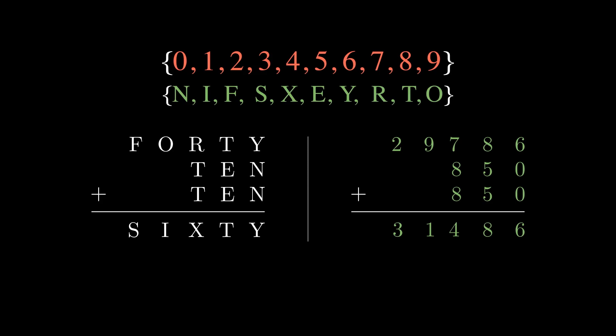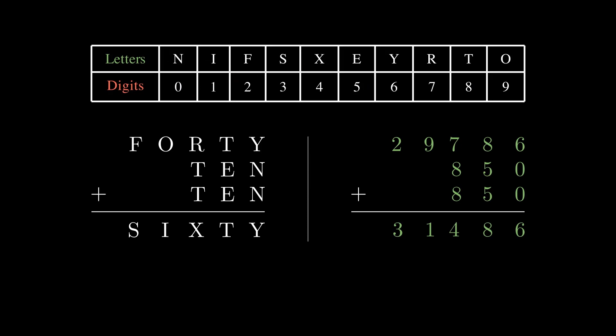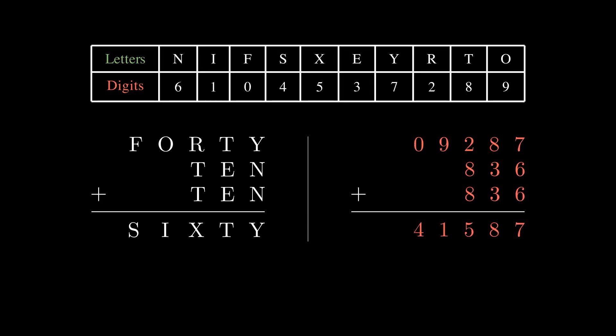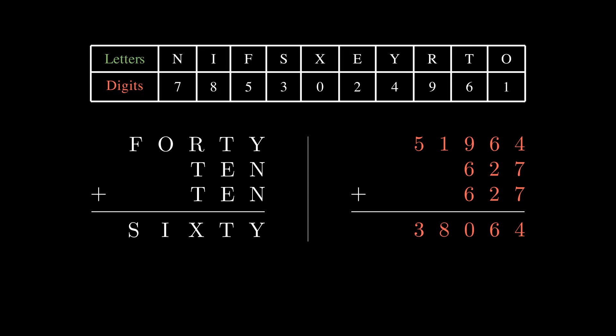Looking closer, our solution can be concisely expressed as a table that maps letters to digits. Notice that this mapping is the only information we need to verify that a solution is correct. We can just plug the digits in place of the letters and see if the resulting statement is true. Similarly, if I give you a different mapping, we can quickly see that it doesn't work. Assuming the order of the letters is fixed, different digit orders naturally correspond to different solutions. Moving forward, let's refer to these digit orderings as permutations.